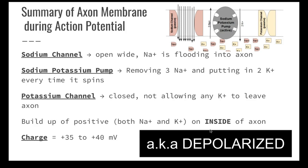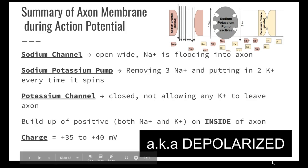This wave of depolarization is going to go along the axon kind of like a wave of dominoes — if you push one domino over, it just starts to cascade. One sodium channel opens, sodium flows into the axon cytoplasm, it goes to the next sodium channel which then opens, and then the next one opens and the next one, until this entire depolarization goes across the axon to the next neuron.